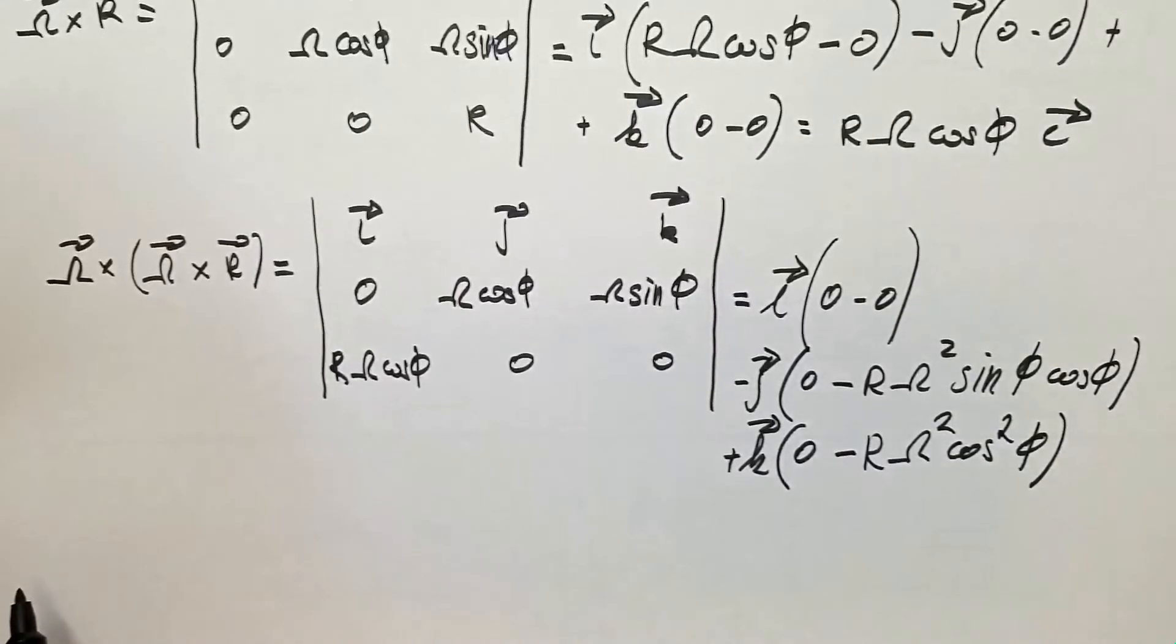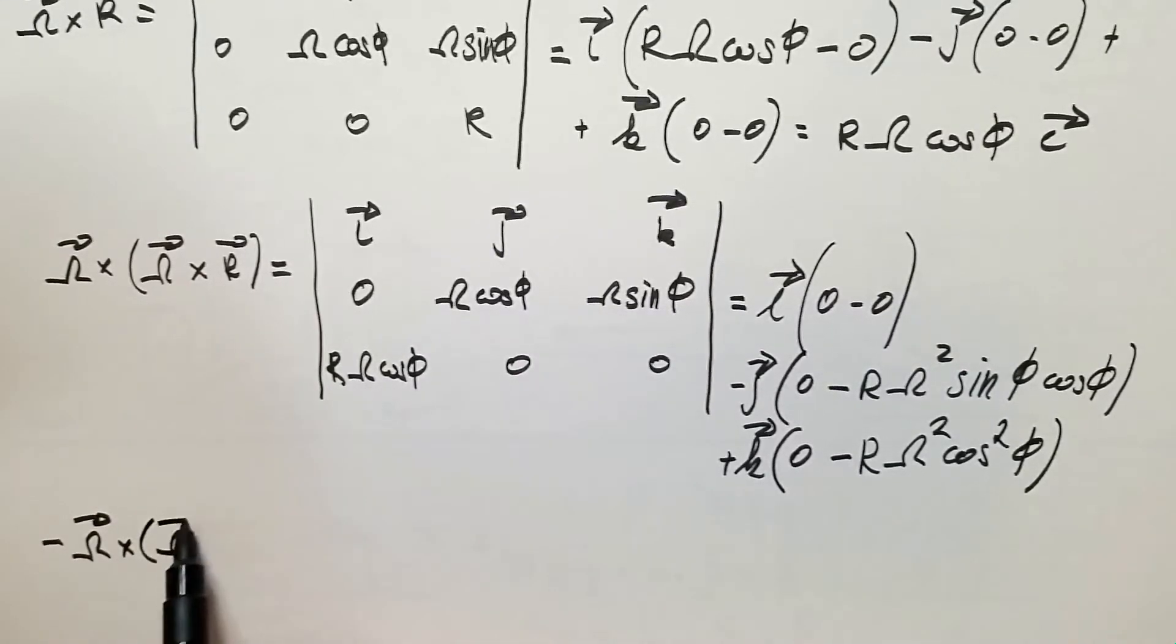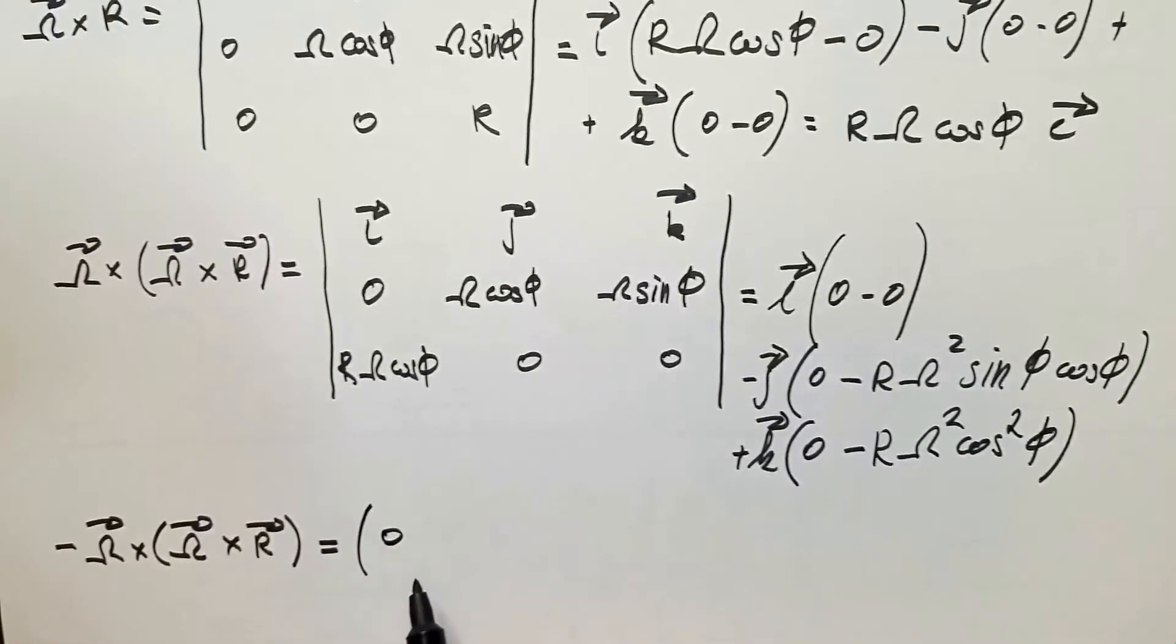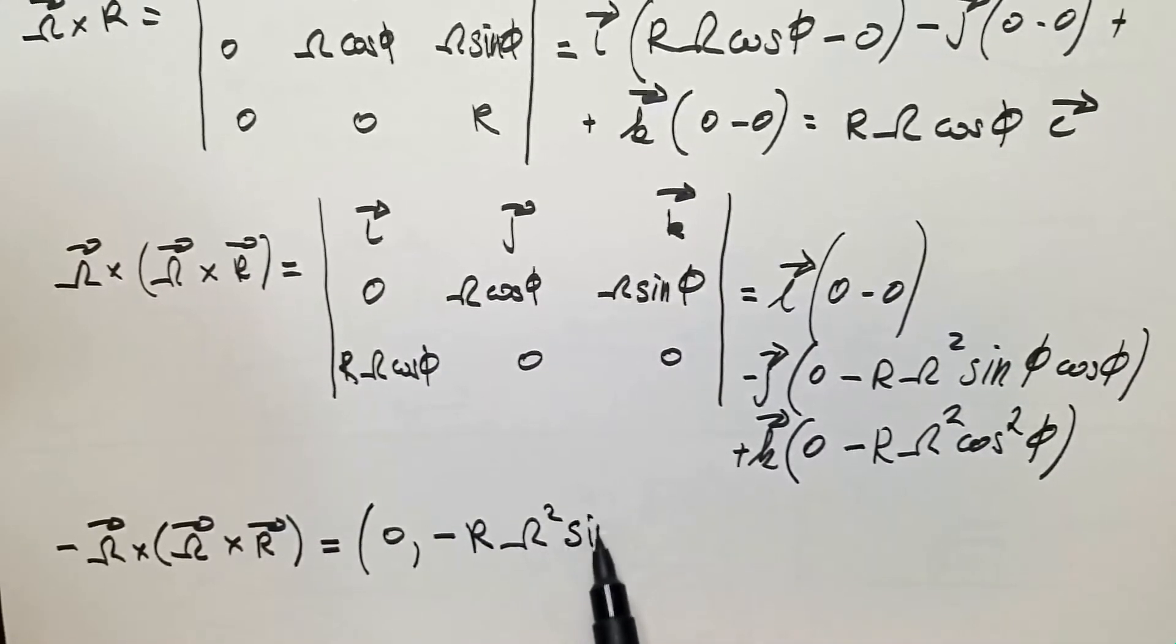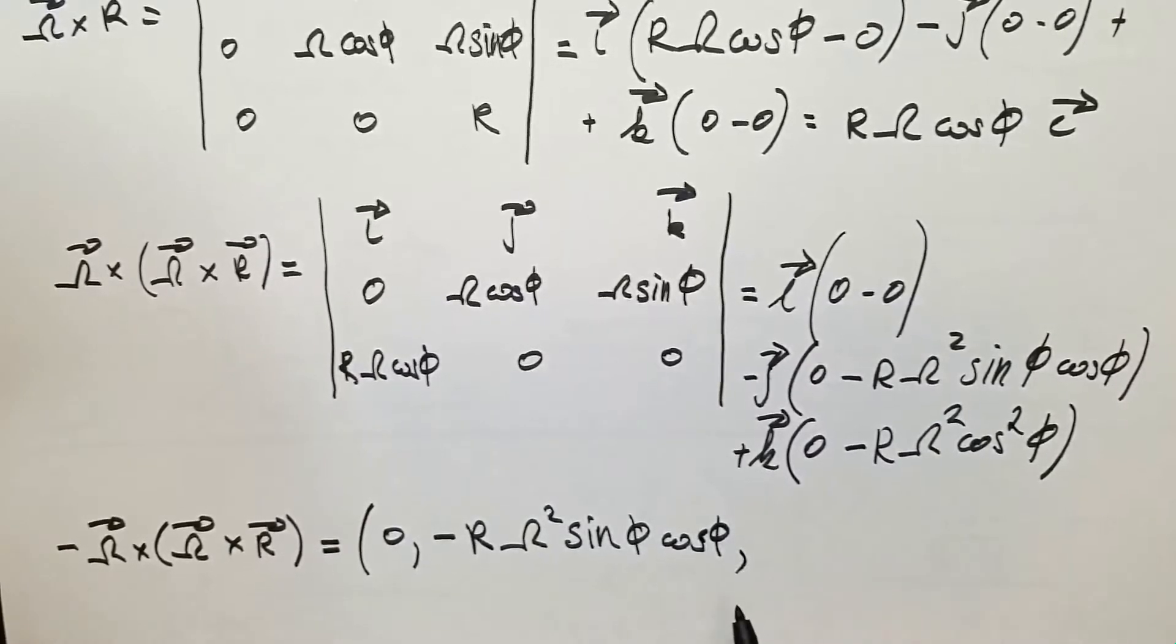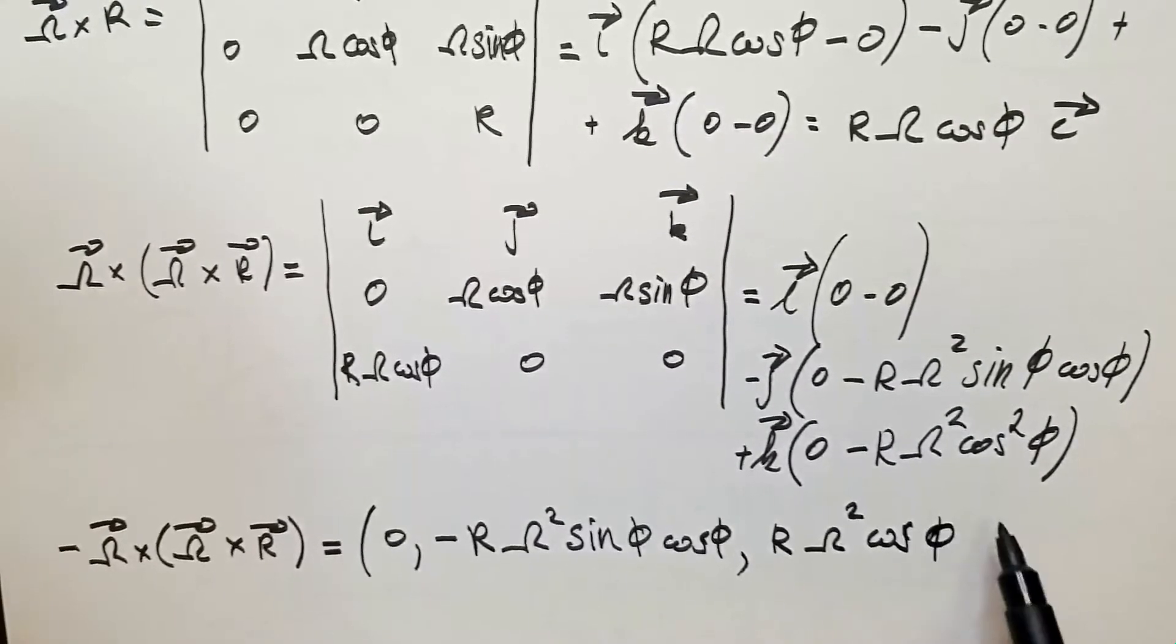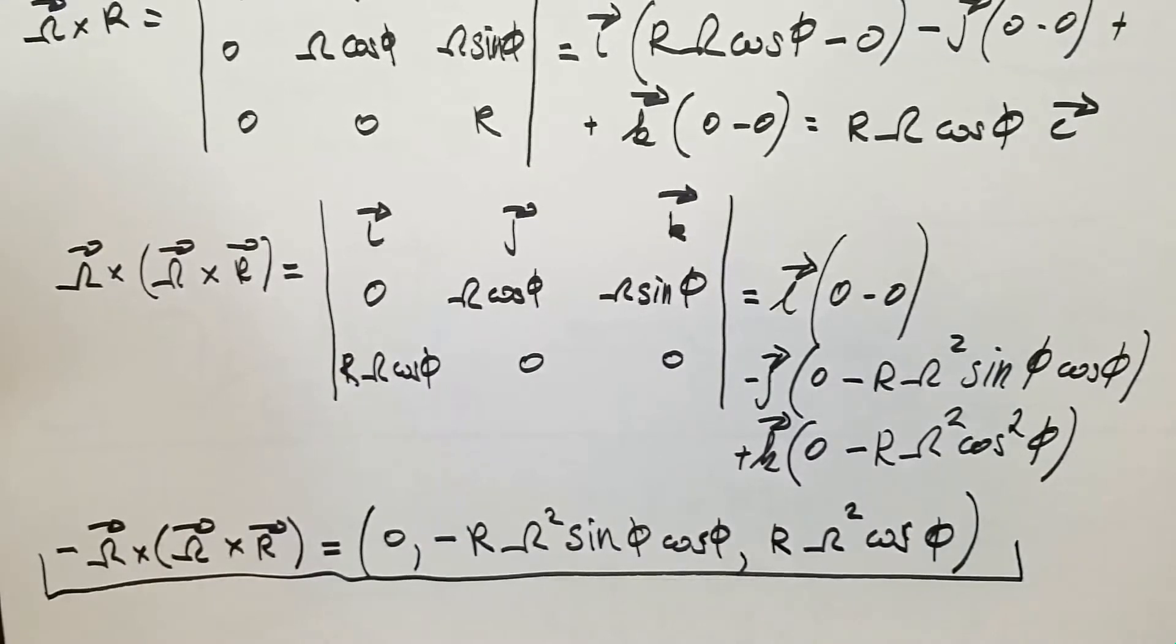My centrifugal acceleration, minus omega cross omega cross R, is equal or has components zero, minus R omega squared sine phi cosine phi, and R omega squared cosine squared phi. This is the centrifugal acceleration on the surface of the Earth.